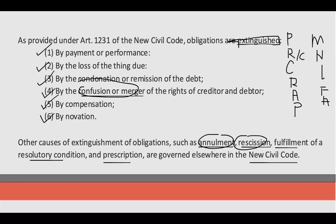Sabi ni Carlo kay Denver, 'Denver, negotiate ko to sayo ah. Ikaw na lang maningil kay Juan de la Cruz nang one hundred thousand, kahit ninety-five thousand na lang ang ibigay mo sa akin — at least kumita ka ng five thousand. Kailangan kasi ng pera. Fifteen days na lang, magjuju and demandable na siya.' O sige na nga, so binigyan ni Denver si Carlo.